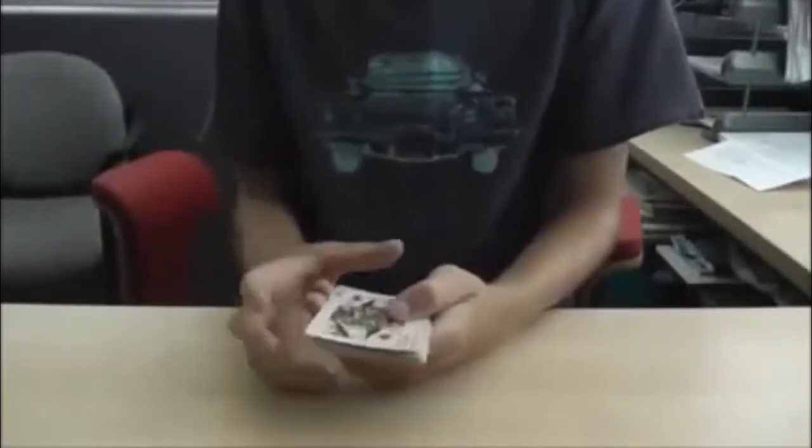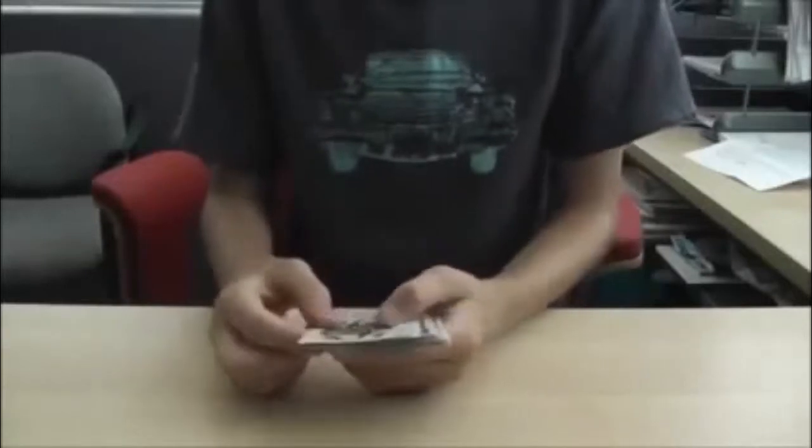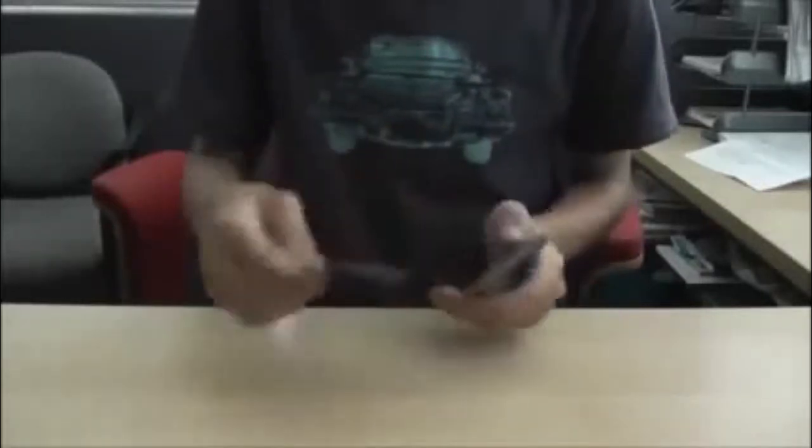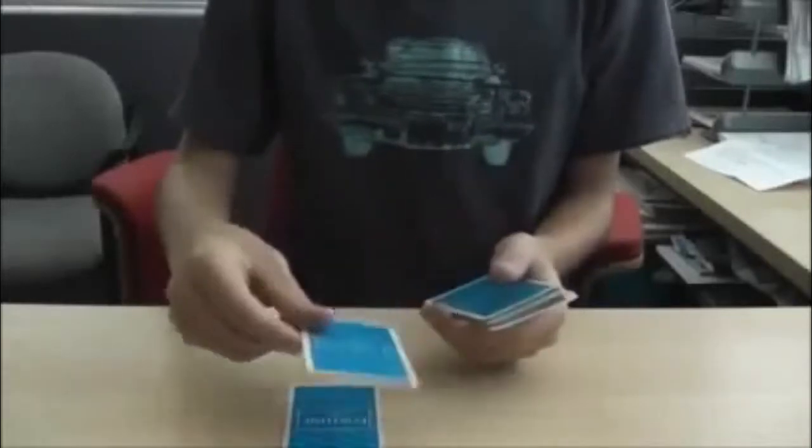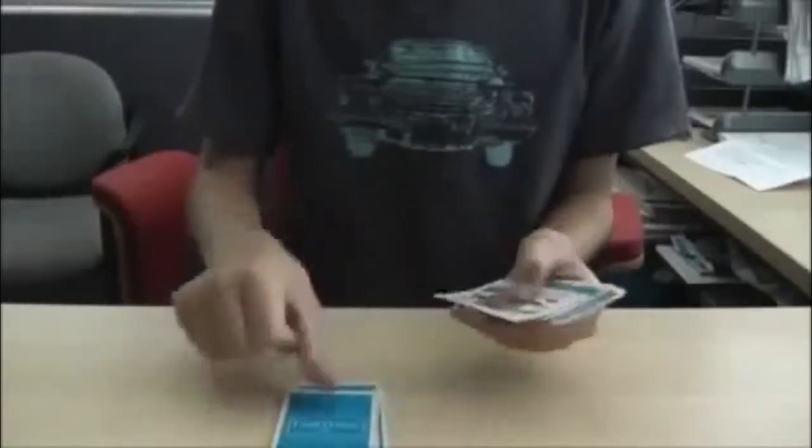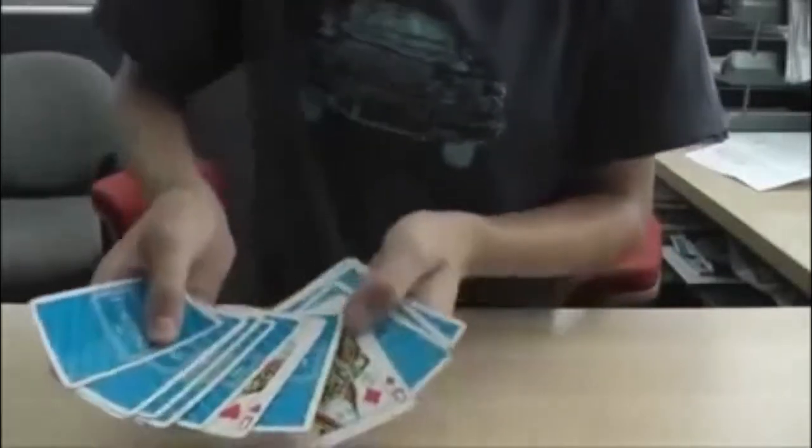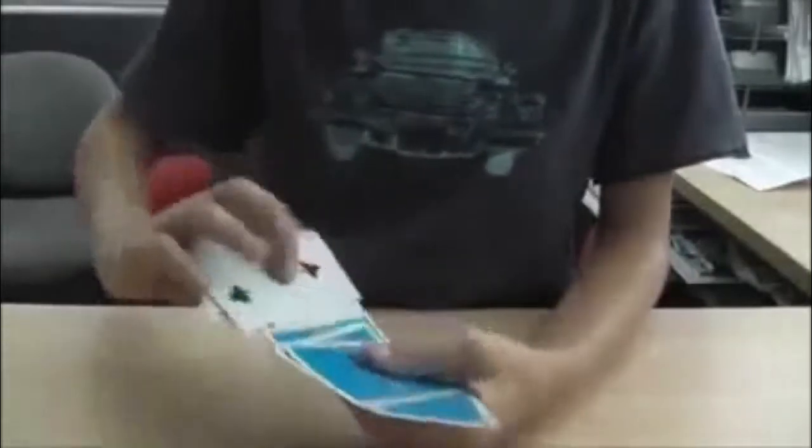Now you go, now I'm gonna spell it out. Between the two red queens, B-E-T-W-E-E-N, cards on top. And their card will always be in between the two red queens no matter what. It's a really cool self-working trick.